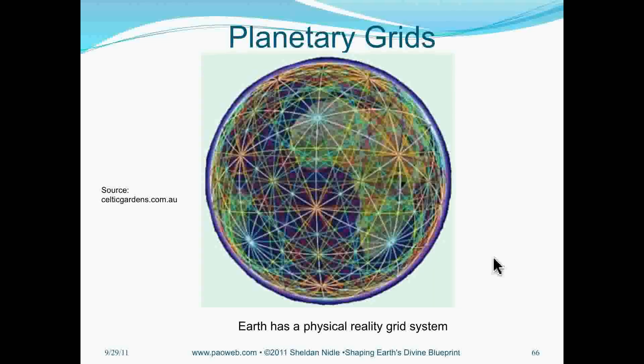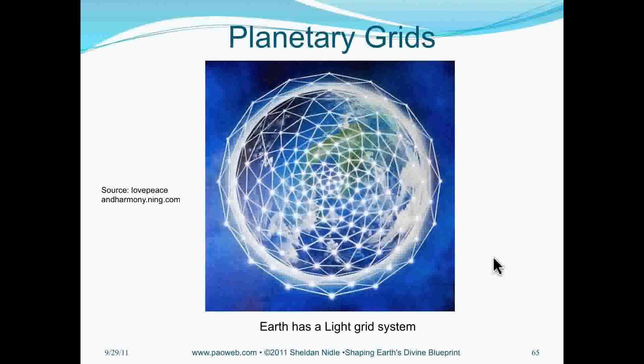Now, not only does the Earth have this light grid, which we have to work with, but she also has a physical grid. That's why the ancient Greeks talked about the Earth consisting of 12 facets. They understood that the planet has its own grid system operating just like our own grid system, which is our meridian system, all around ourselves as living beings. The Earth has that also.